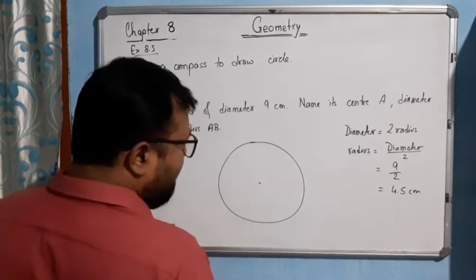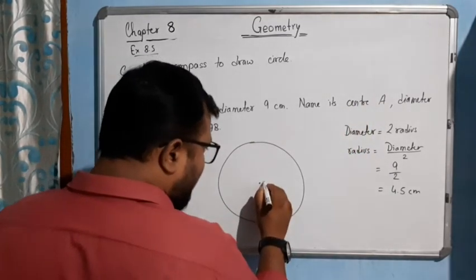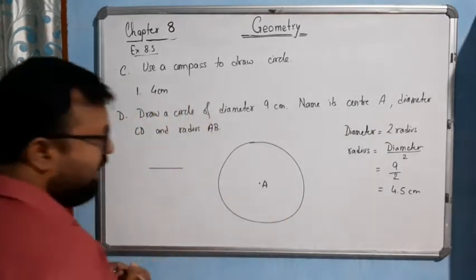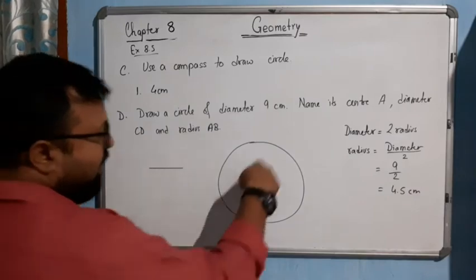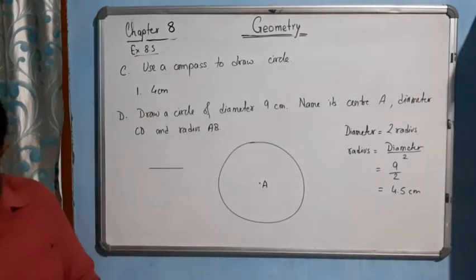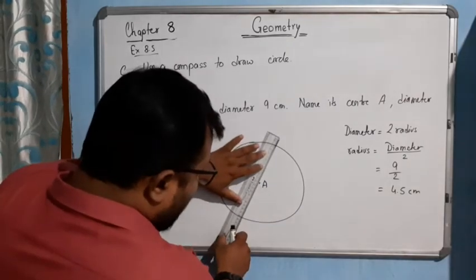This is the center. Now name its center as A. So let me write A here. The center is A. Diameter, it should be diameter, it should be to the center. So you will draw a diameter like this, to the center.